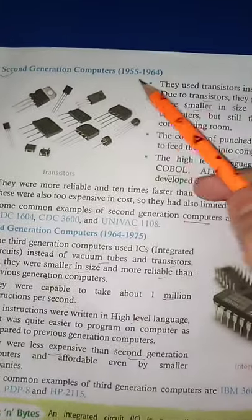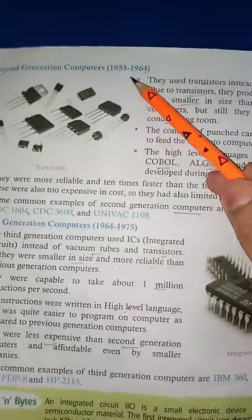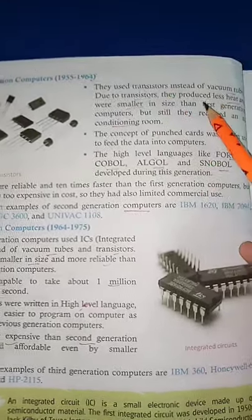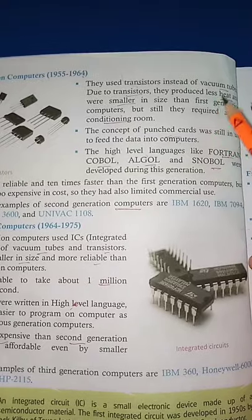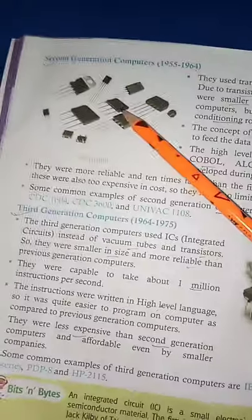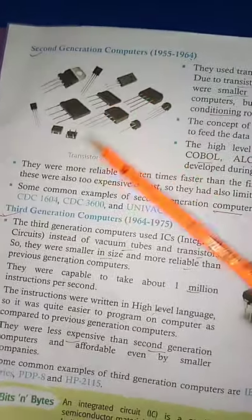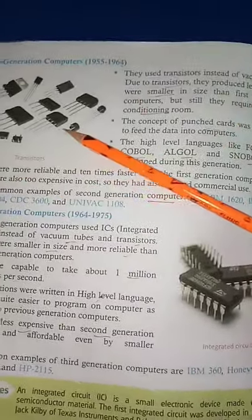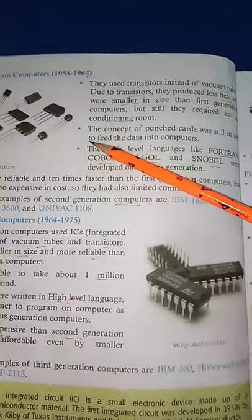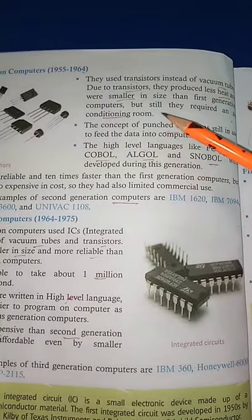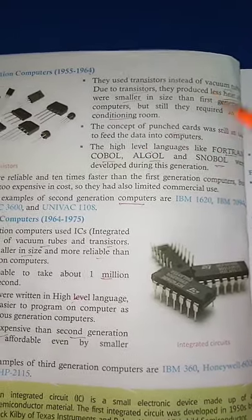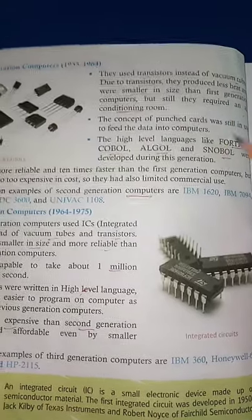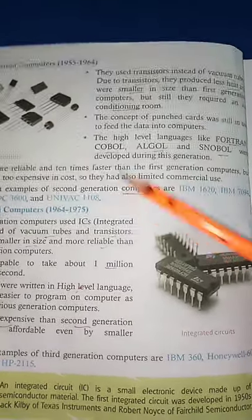Next है second generation of computer, जो 1955 से लेके 1964 तक रही। इसमें vacuum tubes की जगह transistor को use किया जाता था। यह transistor बहुत ही कम मात्रा में heat produce करते थे और size में बहुत ही small रहते थे, first generation के according।